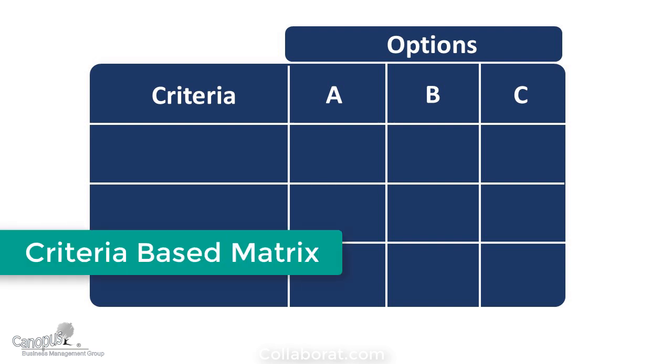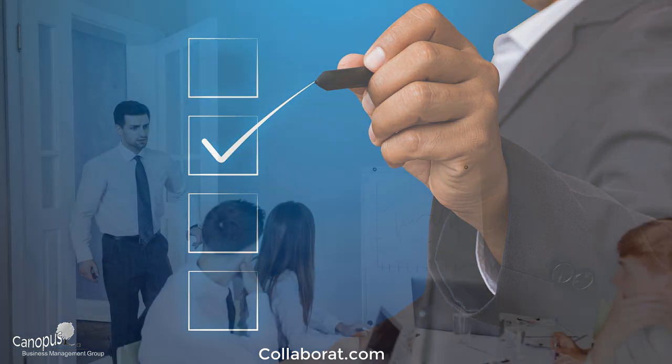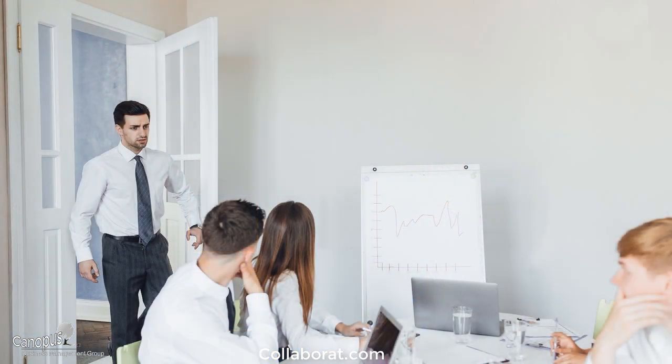In other words, a criteria-based matrix or grid. In such a scenario, you evaluate each option against a defined criteria. The key question is: when should you be voting on such a matrix, and when should you be rating each option against each criteria?